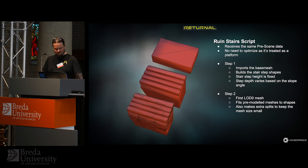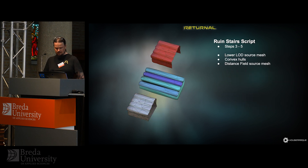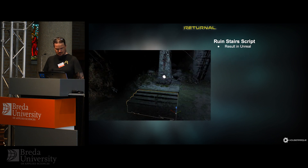In the ruin script, we follow the same first steps, except instead of Voronoi splitting, we fit boxes to the base mesh. The mesh doesn't get optimization treatment since it's treated as a platform. We then fill the blockout shapes with pre-modeled meshes, and the same final steps apply. Results are then viewed in Unreal.